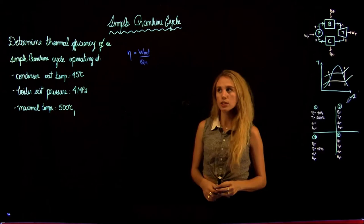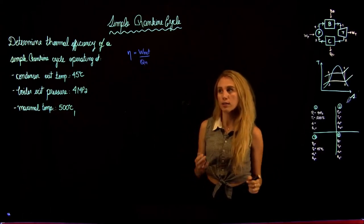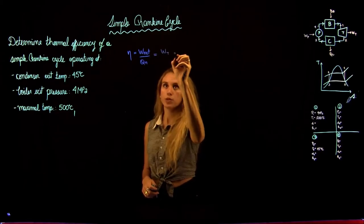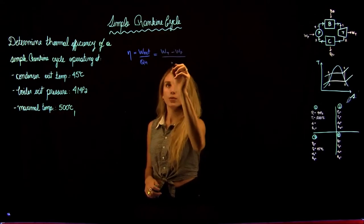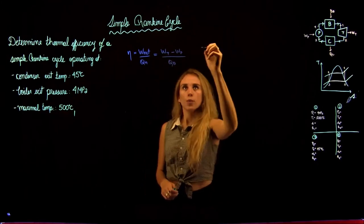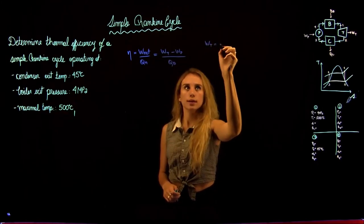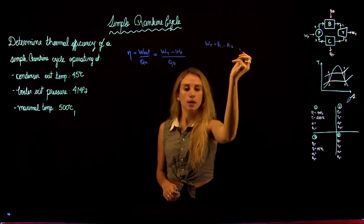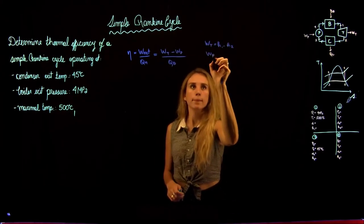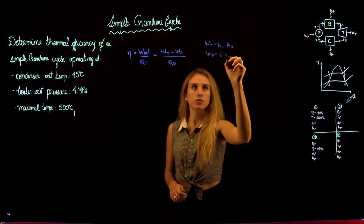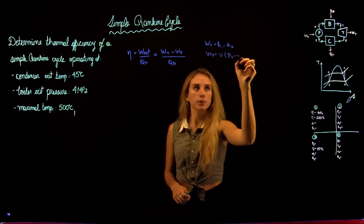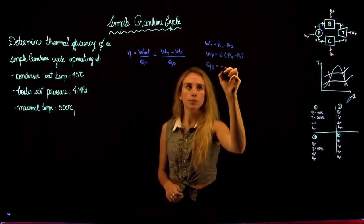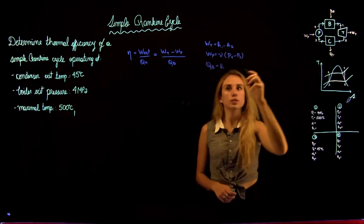We need to find the thermal efficiency, which equals the net work over the heat input. The net work equals the turbine work output minus the pump work input, divided by the heat input at the boiler. The turbine work equals H1 minus H2, the pump work equals the specific volume times the pressure change from high to low pressure, and the boiler heat input QB equals H1 minus H4.